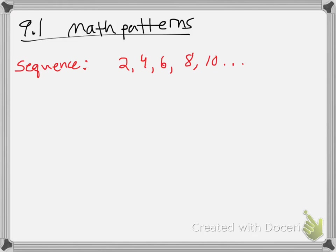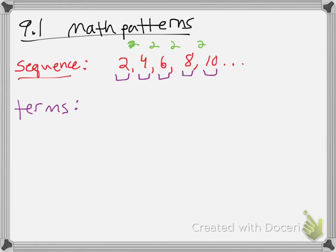A sequence, in the most basic definition, is an ordered list of numbers. Here's a list of numbers: 2, 4, 6, 8, 10. They're in order, and it's our job to try to find the pattern. Go ahead and pause and try to find the pattern. Hopefully you found it — it's going up by 2 each time. 2 plus 2 is 4, plus 2 is 6, plus 2 is 8, plus 2 is 10. All of these items in this sequence — in purple — are called terms.